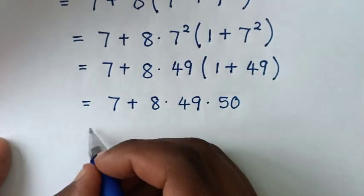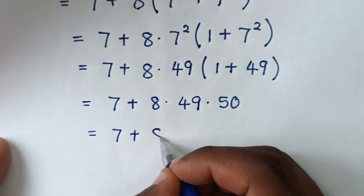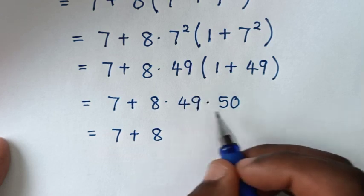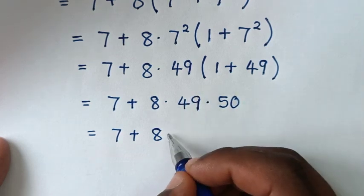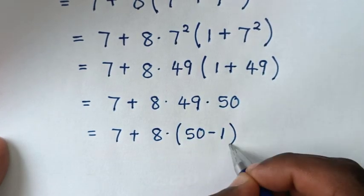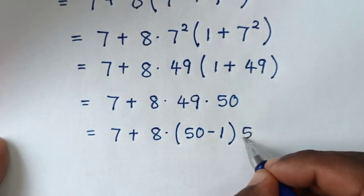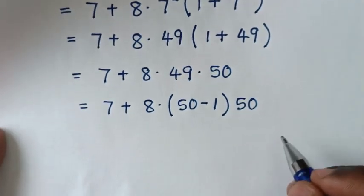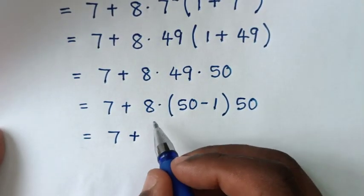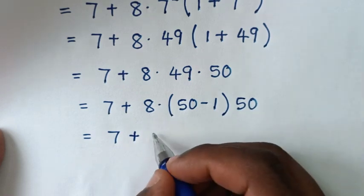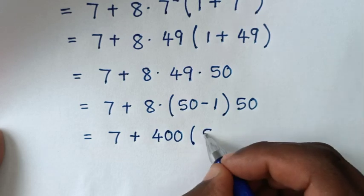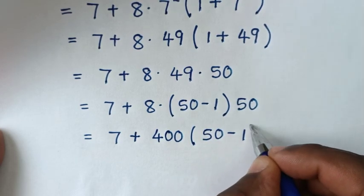Then it will be equal to 7 plus 8, then plus 49 — it will be equal to 7 plus 49, which is the same as 50 minus 1, bracket, then times 50. Then it will be equal to 7, then plus 7, then plus 8 times 50 is 400, then bracket 50 minus 1, bracket.